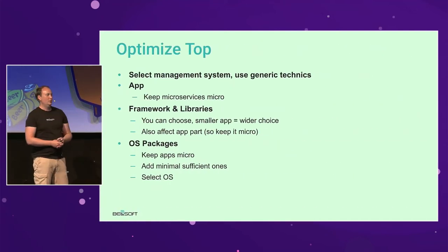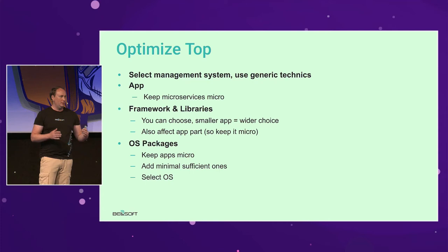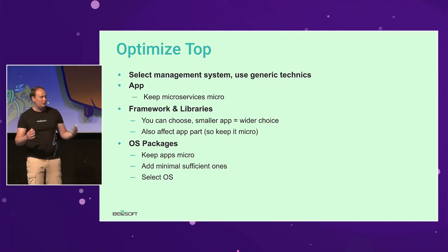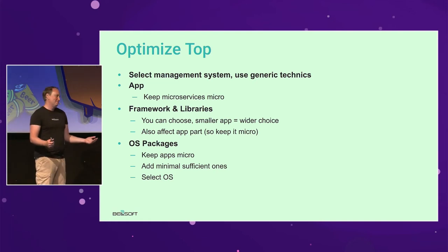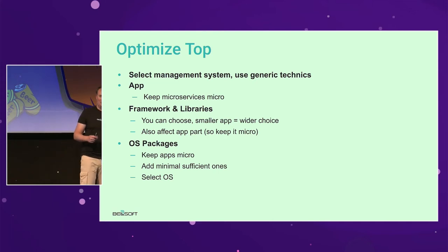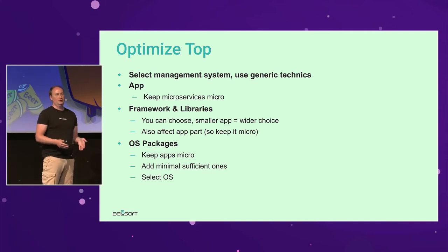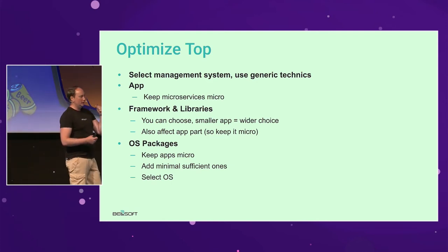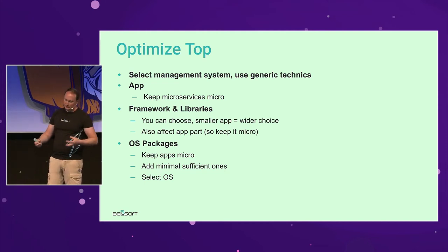We are trying to make our images smaller. So how do we do that? First, let's look at the application — let's make the application part smaller. Because microservices are not so micro nowadays: hundreds of megabytes per service in jar files. We can make it smaller by splitting into parts, keeping microservices micro. We can also use smaller dependencies, smaller libraries, or native tools that help our application.